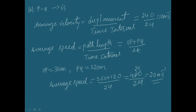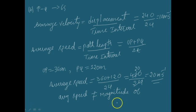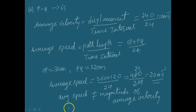This is a very simple problem. In this case, the average speed is not equal to the magnitude of average velocity — both are different. This happens because the motion here involves a change in direction, so the path length is greater than the magnitude of displacement. This shows that speed is in general greater than the magnitude of velocity.